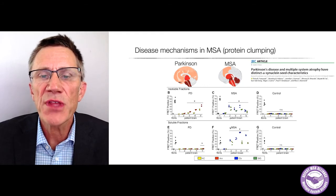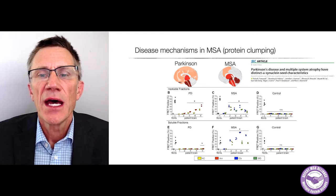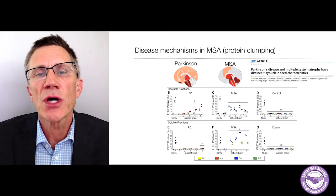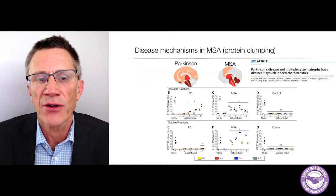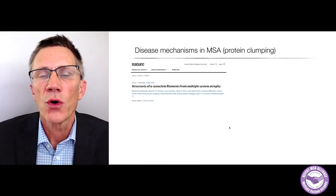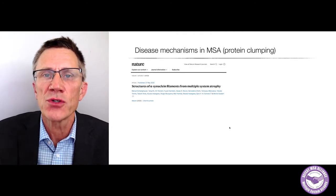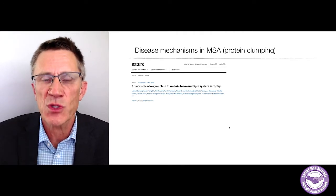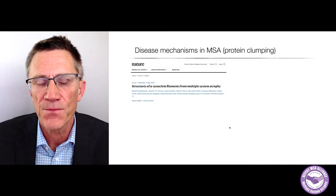The MSA was much more prone to cause aggregation — the dots are higher up on the MSA brain samples. Something is clearly different here. We're trying to understand why the MSA synuclein aggregates are so prone to replicating themselves and seeding more aggregation.